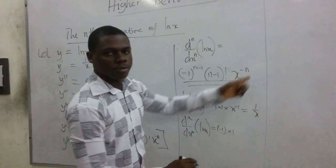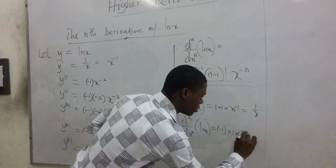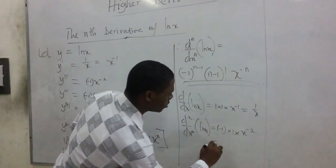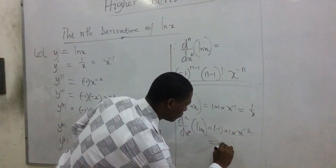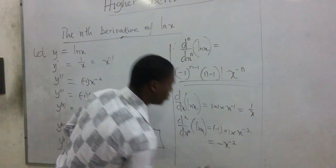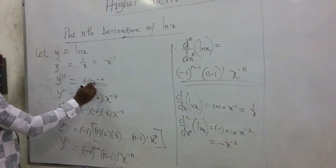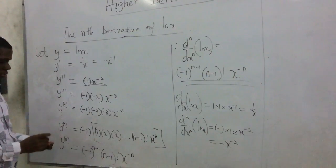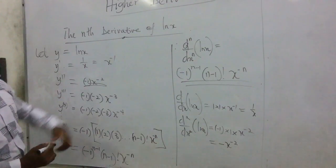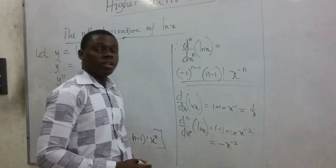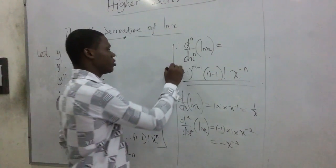Then we put in 2 here. So this gives us negative 2. And the result is negative x to power negative 2. Is it here? Yes, it is here. So we realize that the nth derivative of ln(x) is actually equal to this.